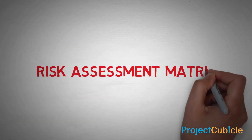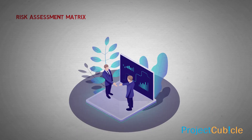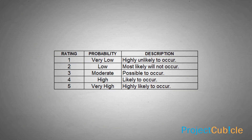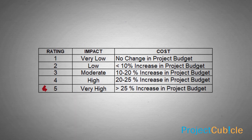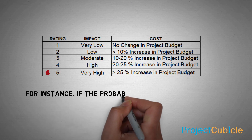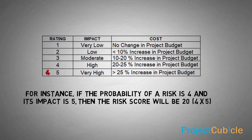A risk assessment matrix is a useful tool that helps you rate project risks as low, medium, high, or very high. You start by defining the rating scales for probability and impact. Rating 5 is the highest for both probability and impact. Multiplying probability by impact gives a risk score — for instance, if the probability is 4 and the impact is 5, the risk score is 4 × 5 = 20. This tool can be applied to both positive and negative risks when performing qualitative risk analysis.